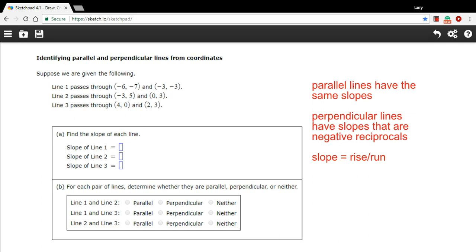We really need to know three things in order to solve a problem like this. We need to know that parallel lines have the same slope, that perpendicular lines have slopes that are negative reciprocals, and that slope is rise over run, so how much the line goes up over how much it goes over to the right.